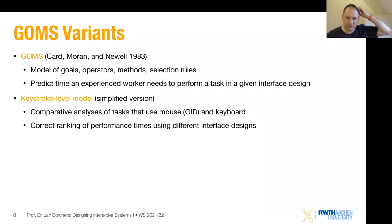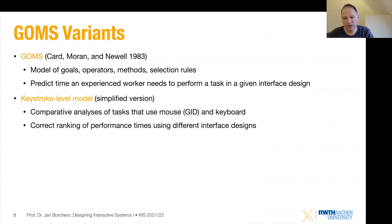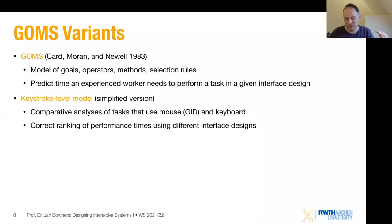People figured out that GOMS tended to overestimate times — people were faster than the model suggested. The operator numbers were right because they came from experiments, but adding them all up produced estimates that were too high. Why? Because our brain can actually overlap things a bit. While you are zeroing in on a button to click, you don't move your pointer there, stop, check your location, freeze, and then click. You already start initiating the next action before the previous one is finished. So we have overlapping actions and shorter overall times.